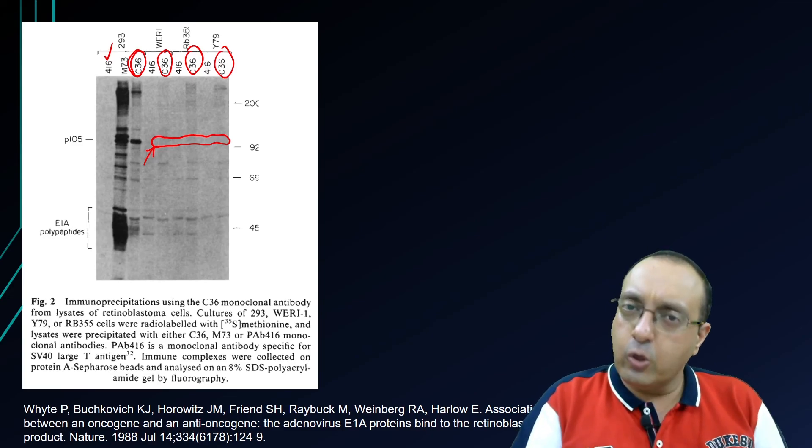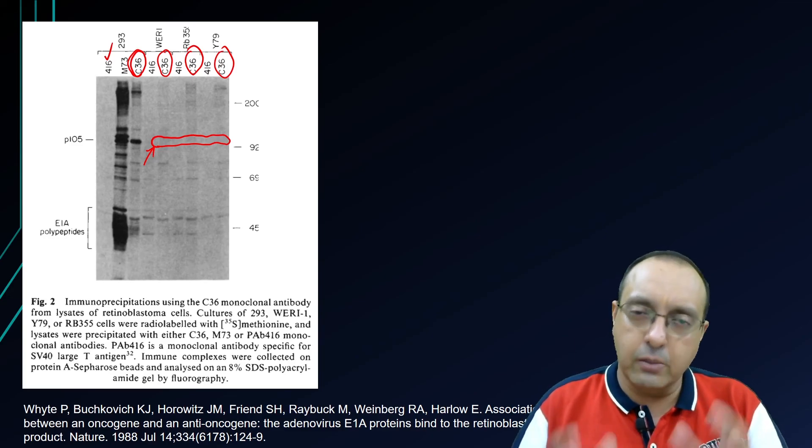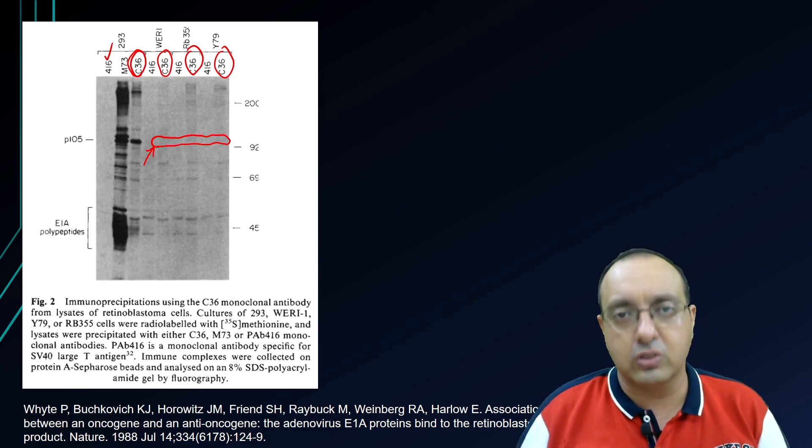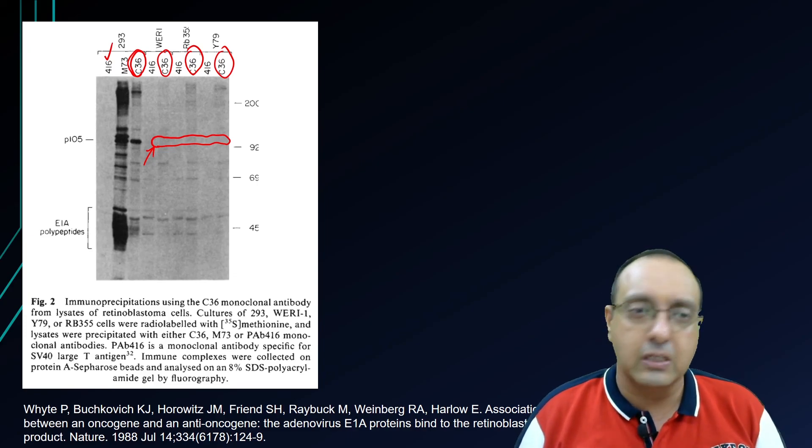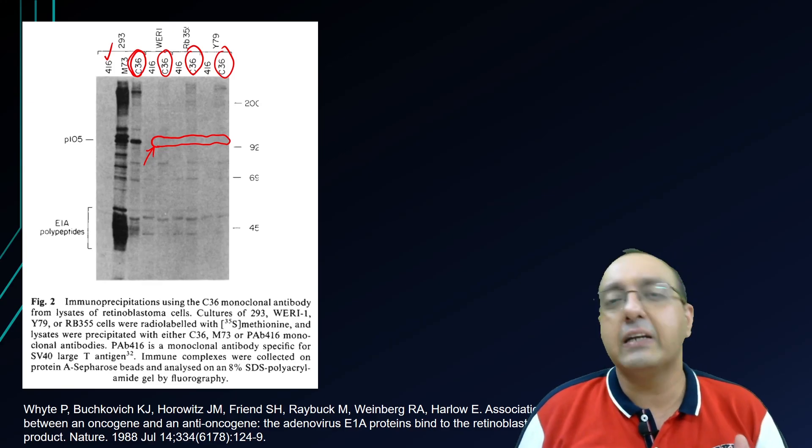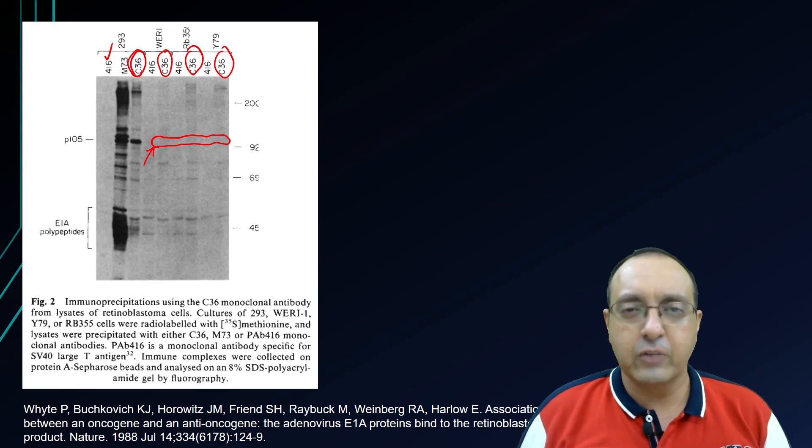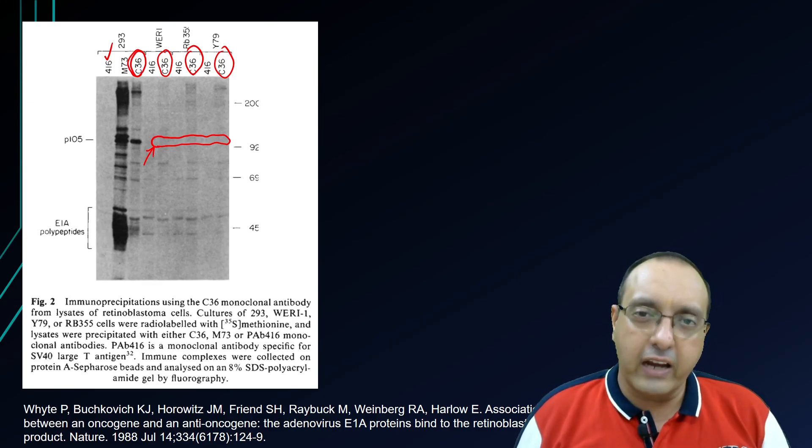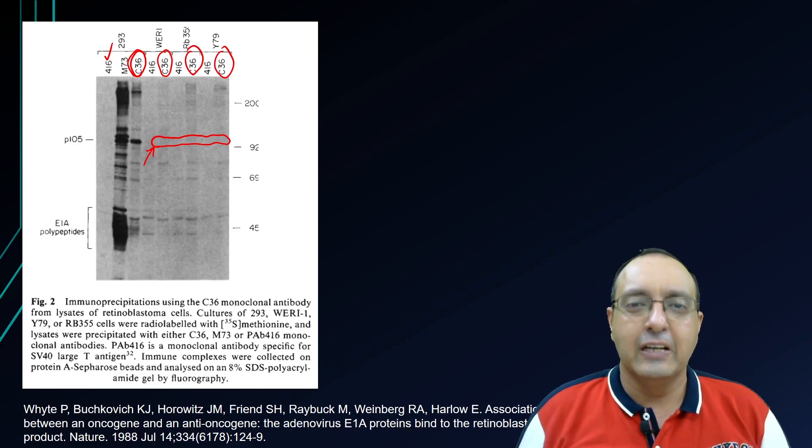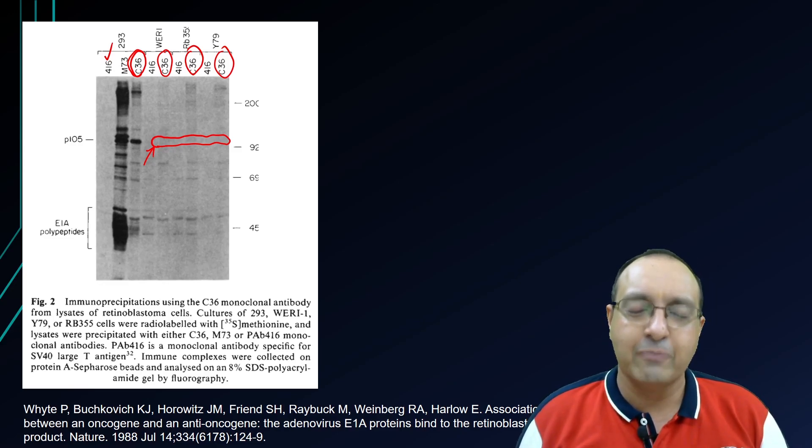So immunoprecipitation and co-immunoprecipitation, both very useful techniques, very easy to use, very easy to apply in most research labs. There are no filters or columns or centrifugation steps to complicate our analysis, very easy to employ and give rapid kinetics and rapid results. So very useful. I hope you like this information about immunoprecipitation and co-immunoprecipitation. If you liked it, please give it a thumbs up and do subscribe to my channel for more educational videos like this. Till the next time we meet, take care and bye-bye.